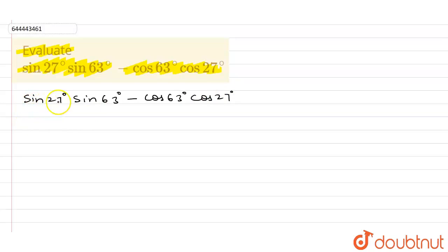Sin 27 degree can be written as sin 90 degree minus 63 degree into sin 63 degree minus cos 63 degree into cos 27 degree, which can be written as cos 90 degree minus 63 degree.